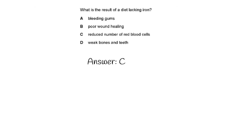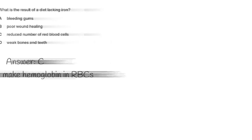And the third question was, the answer was C, because iron is used to make hemoglobin, which is what you find in red blood cells. So if you have a lack of iron, then you're not going to be able to make as much red blood cells. So therefore you'll get a reduction in the count of red blood cells in the body.